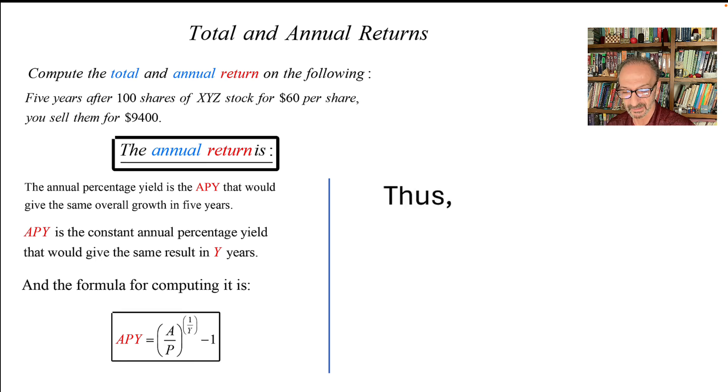Just doing the math and applying it, we get the following: $9,400 divided by $6,000 to the power 1 over 5, minus one, is approximate—that's not exact, that's approximate—to 0.094, which is about 9.4 percent.